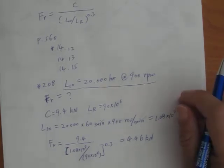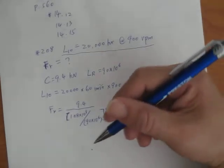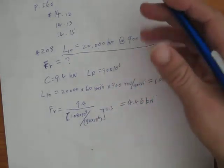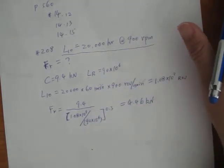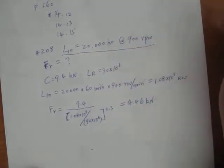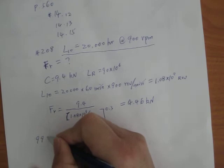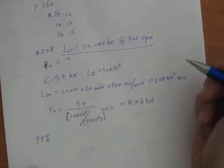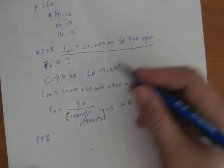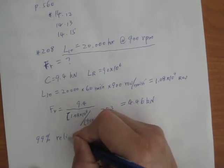Now we talk about the number of factors that's gonna affect the bearing life. For example, how about if I want to have higher reliability? If I want to have 99% of reliability instead of 90%, I want a better one.